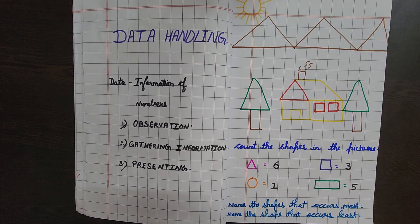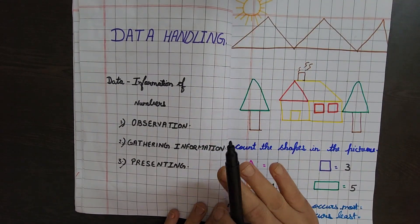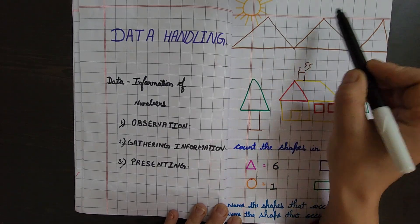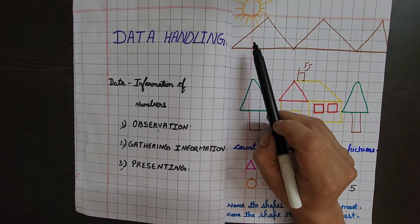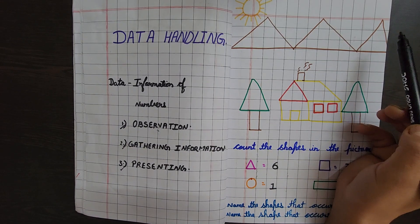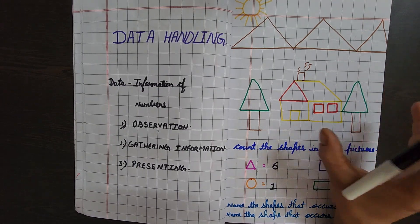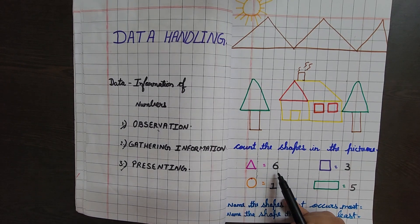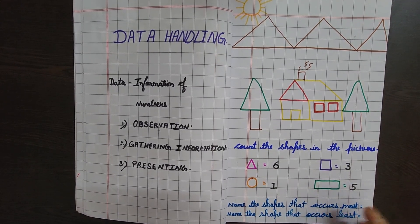So this is data handling: gathering information. First observation — we observed the scenery. Then gathering information — we found different shapes: rectangle, triangle, square, circle. Then presenting — we wrote down how many triangles, squares, circles, and rectangles are there. This is the three-step process.